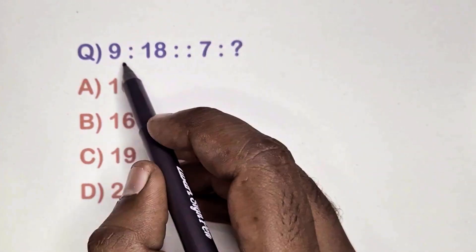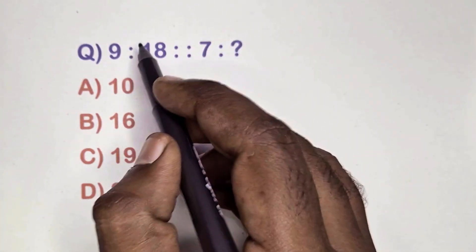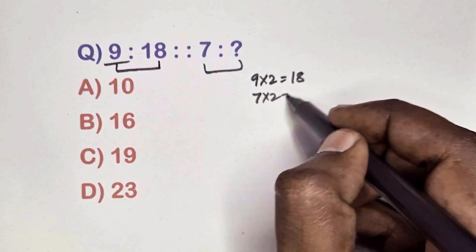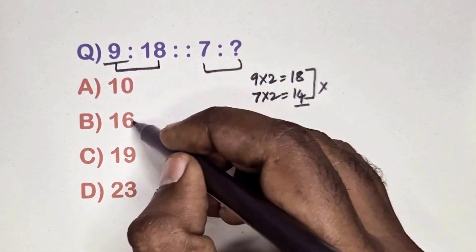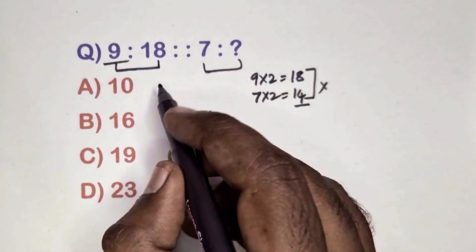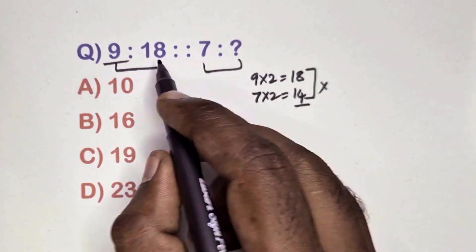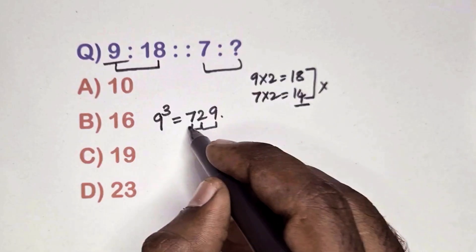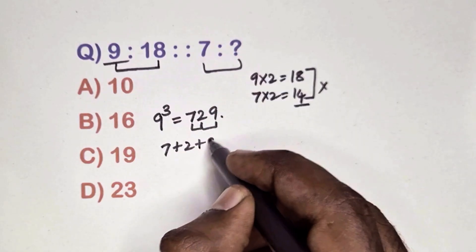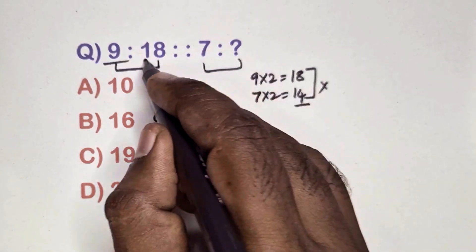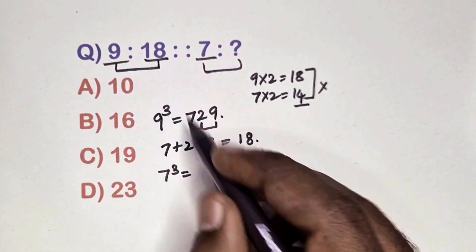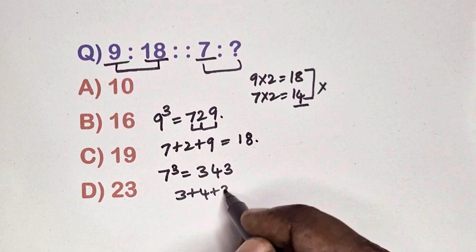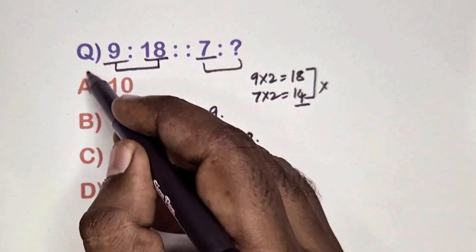Find the relation between this pair of numbers. Take 9 — 9 into 2 is 18, but 14 (7 into 2) is not in the options, so this is the wrong method. Take 9 cubed: 9 cubed is 729; add the digits to get 18. Same way, 7 cubed is 343; add the digits to get 10. Option A is the correct answer.